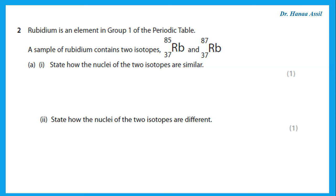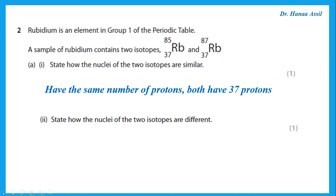Rubidium is an element in group one of the periodic table. A sample of rubidium contains two isotopes. State how the nuclei of the two isotopes are similar. Remember, isotopes have the same number of protons. Both of these have 37 protons. Remember, the number of protons is the same as the atomic number, which is the smaller number.